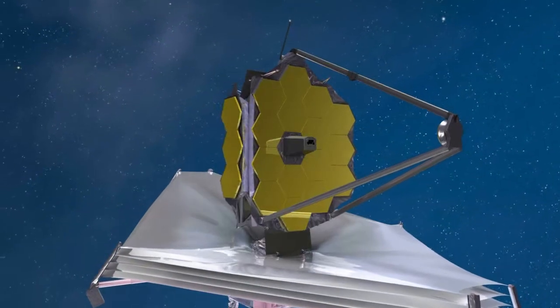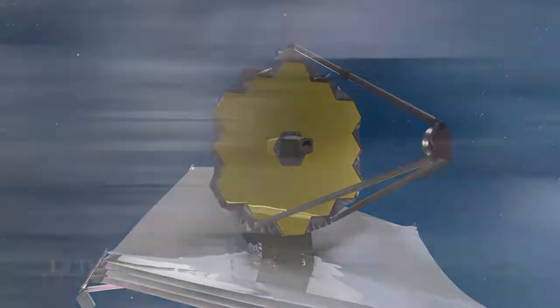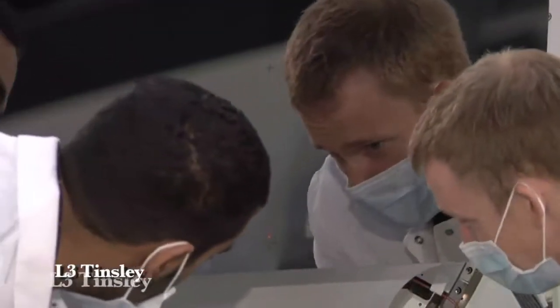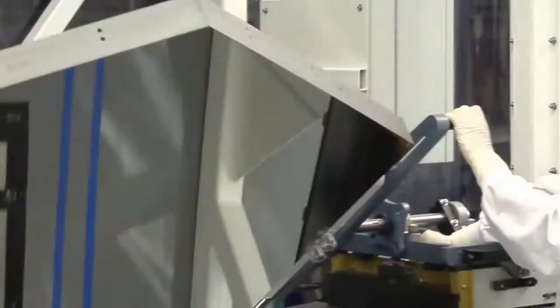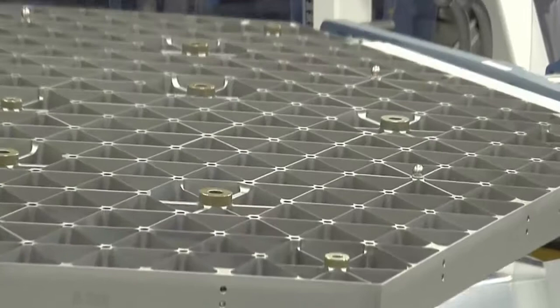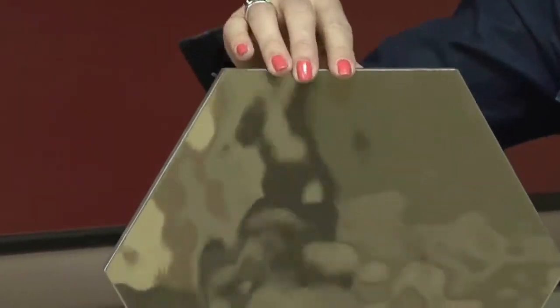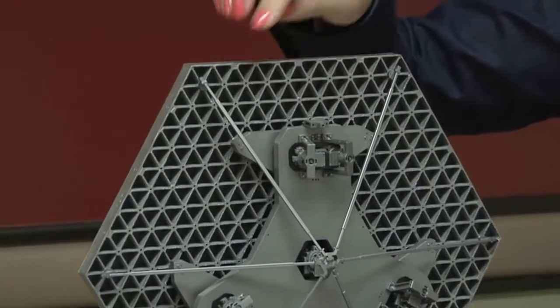Webb's mirror segments are also being tested and scrutinized at L3 Tinsley in Richmond, California. The mirror segments are highly polished on the reflector side and honeycombed for lighter weight on the other. Mounting points for attachment of control actuators are installed on the rear of the mirror elements.